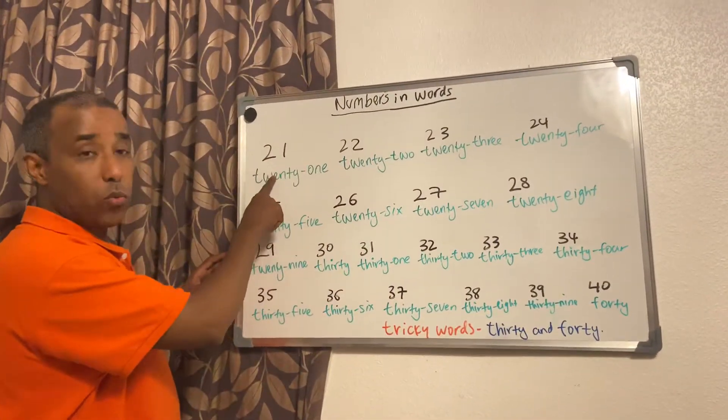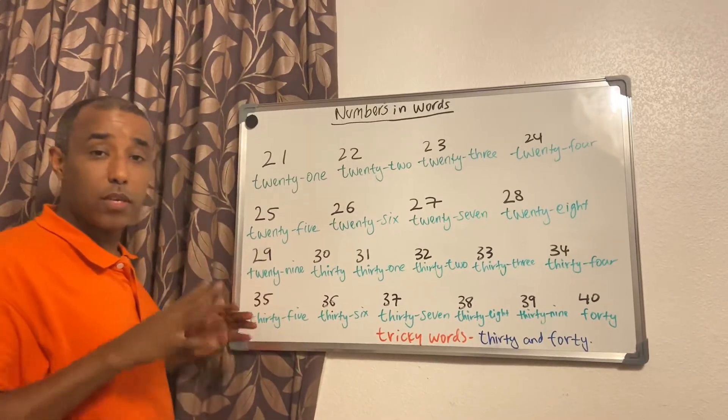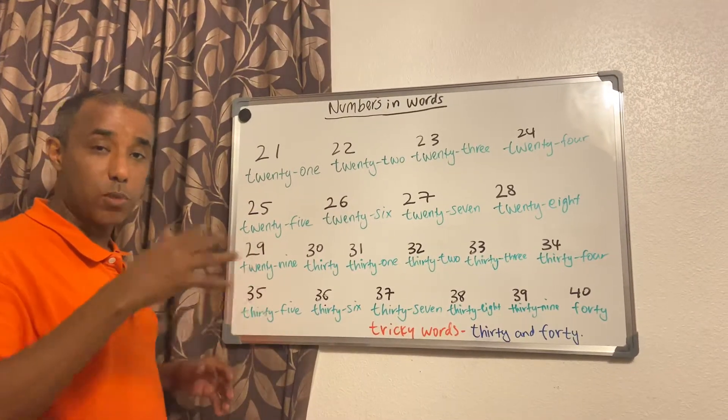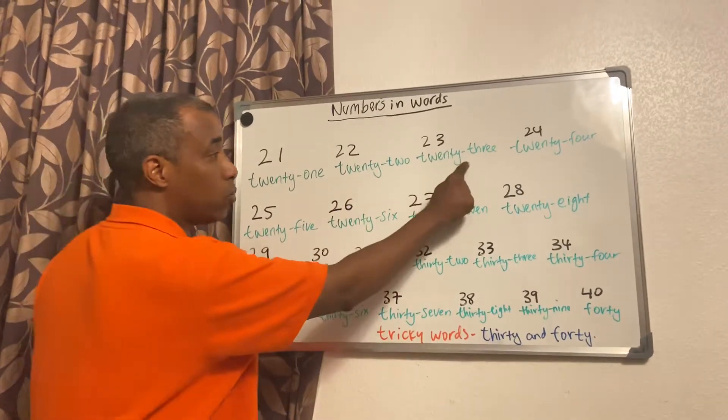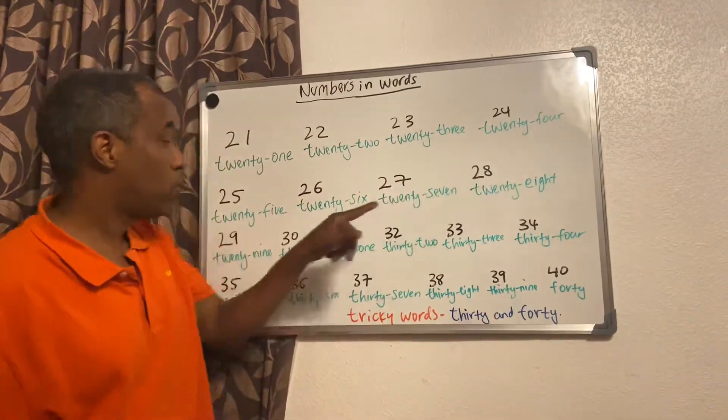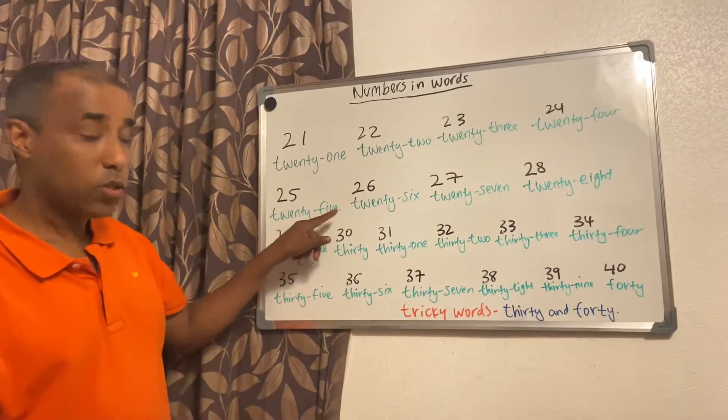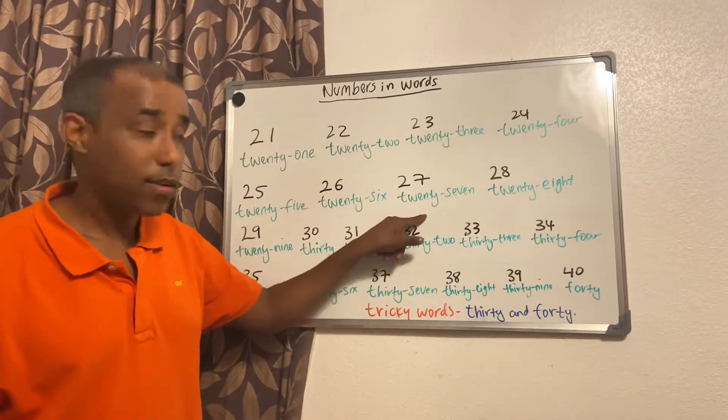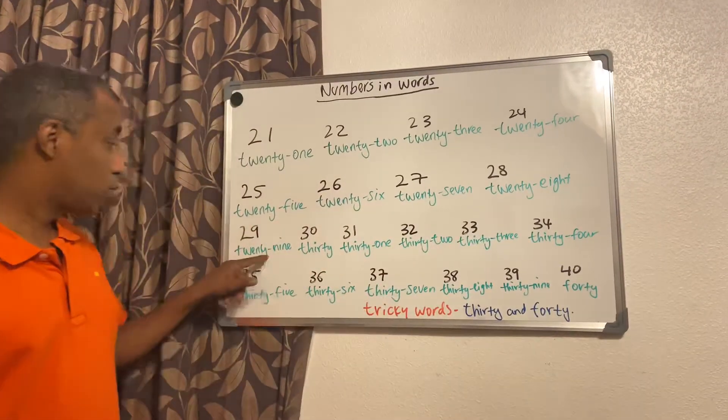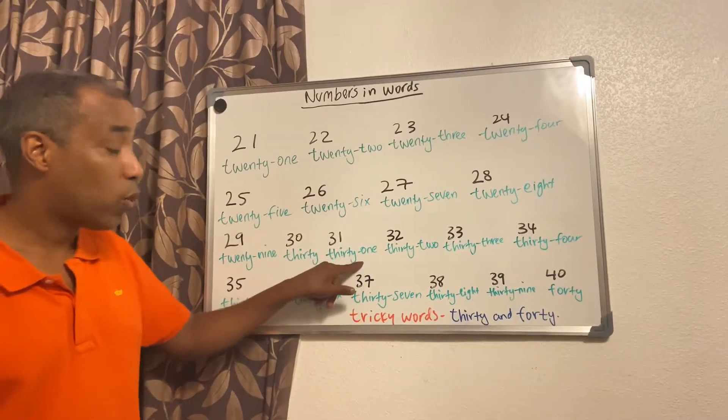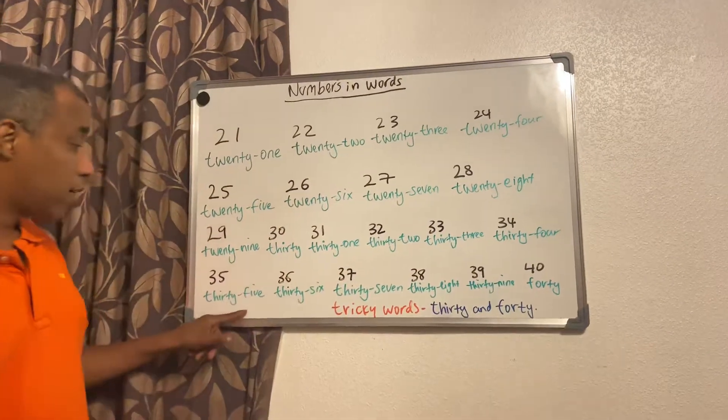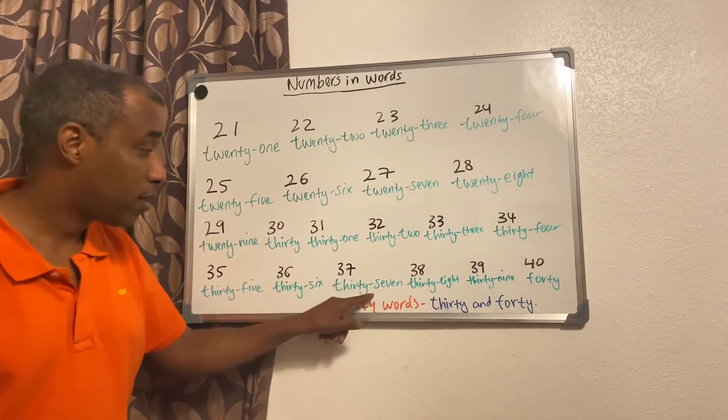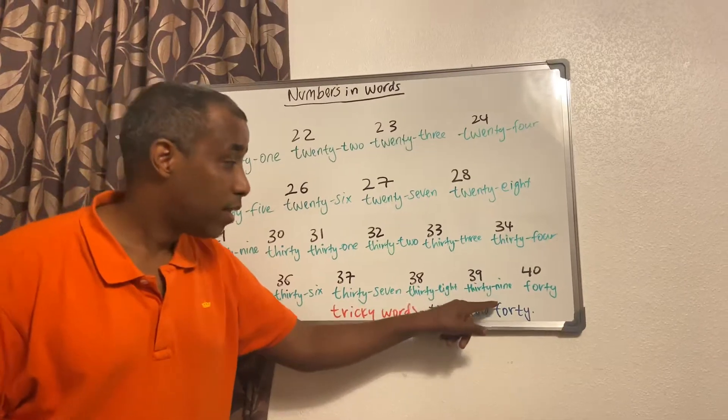Numbers in words. We're going to start with 21. First we're going to read the numbers and then we'll spell them. 21, 22, 23, 24, 25, 26, 27, 28, 29, 30, 31, 32, 33, 34, 35, 36, 37, 38, 39, and 40.